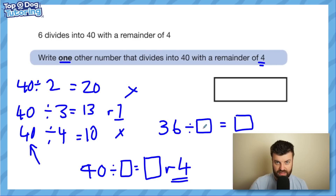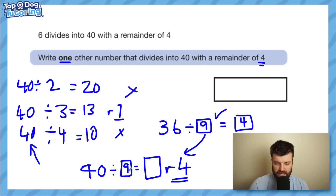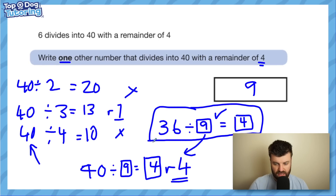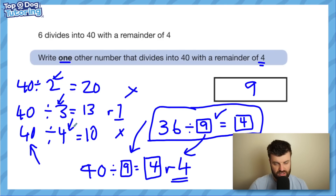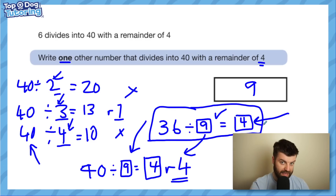We could put in 9. 36 divided by 9 works perfectly — it gives me 4. Now test it against the original: 40 divided by 9. That goes 9, 18, 27, 36 — that's 4 times, with 4 left over, getting us up to 40. So 9 is the answer. The question rewards figuring out you want a factor of 36 and then testing it to confirm a remainder of 4. Because some factors of 36, like 2, 3, or 4, don't work — you have to go for a higher number, something bigger than 4. If it's less than 4, how can it have a remainder of 4? You have to figure out it's going to be a bigger number that goes into 36 exactly.